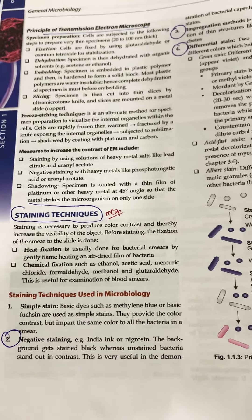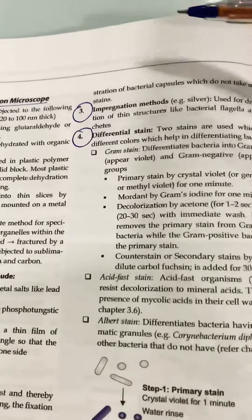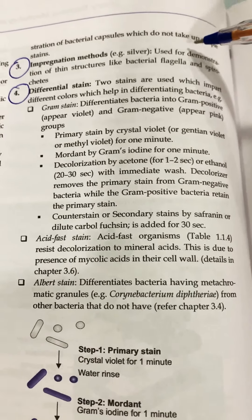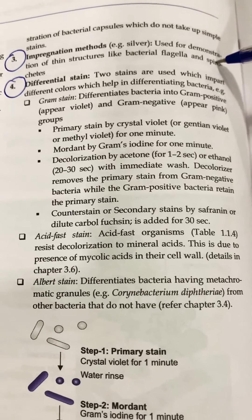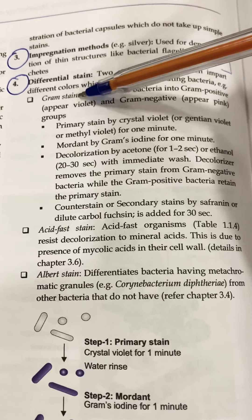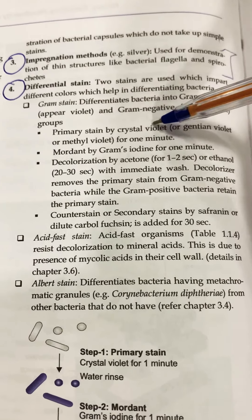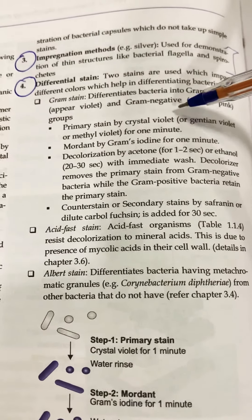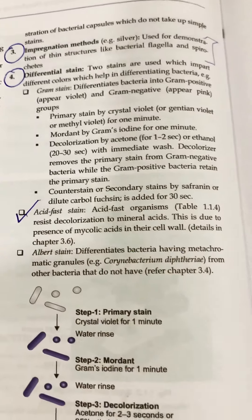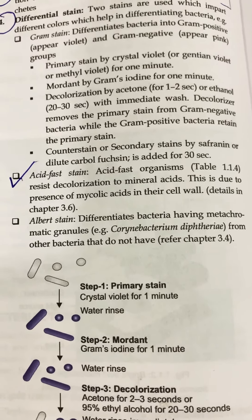Then comes the impregnation methods, in which we use silver to determine bacterial flagella and spirochetes — also very important. The gram stain should be on your fingertips: gram positive bacteria, gram negative bacteria, the entire process of gram staining. Then comes acid-fast staining — acid-fast organisms resist decolorization by various acids due to mycolic acids.